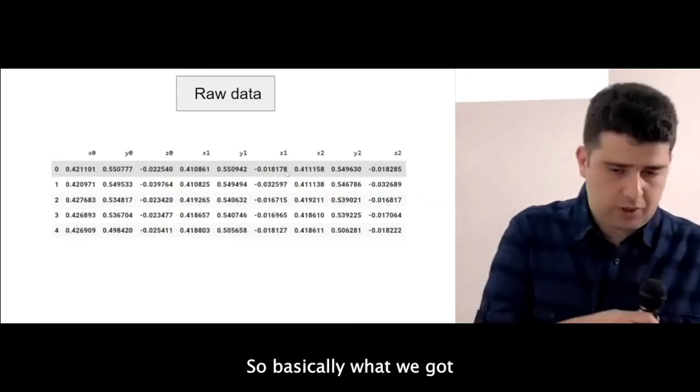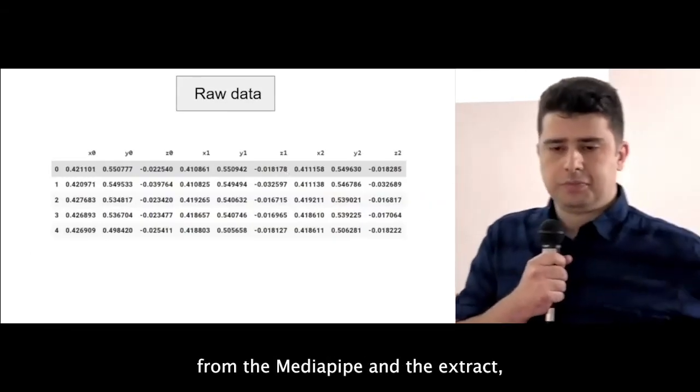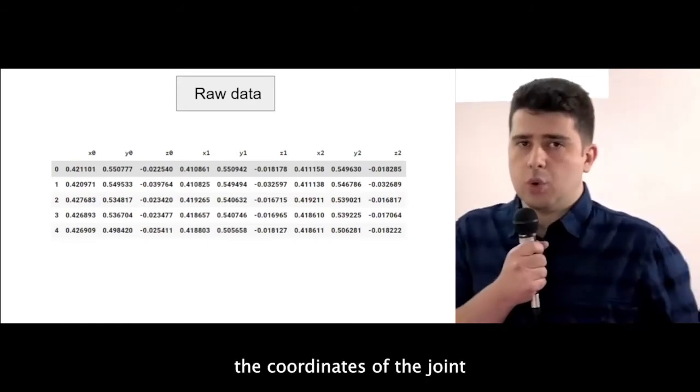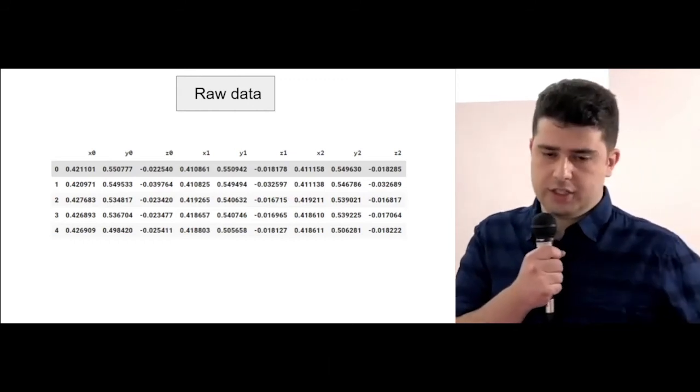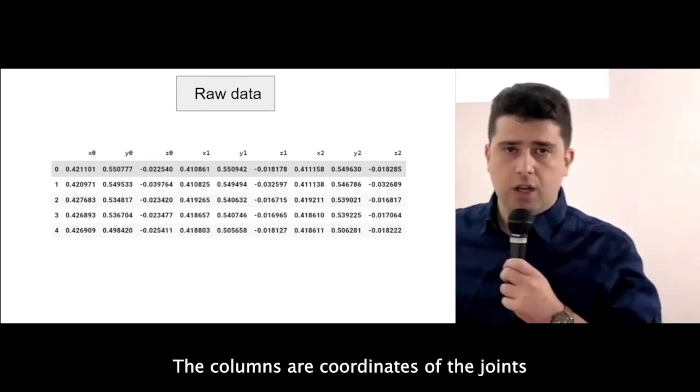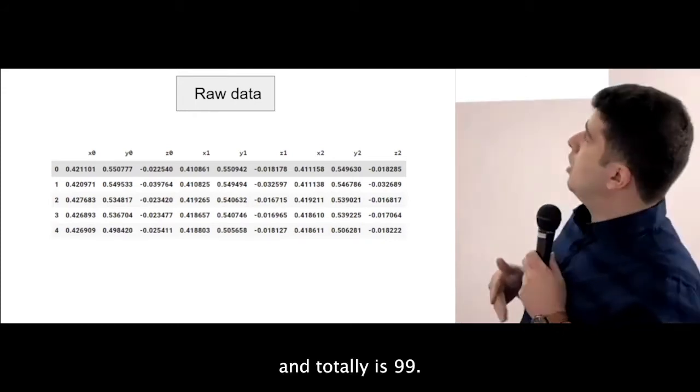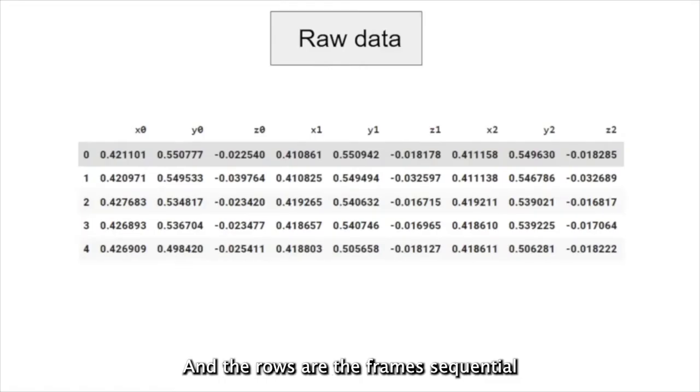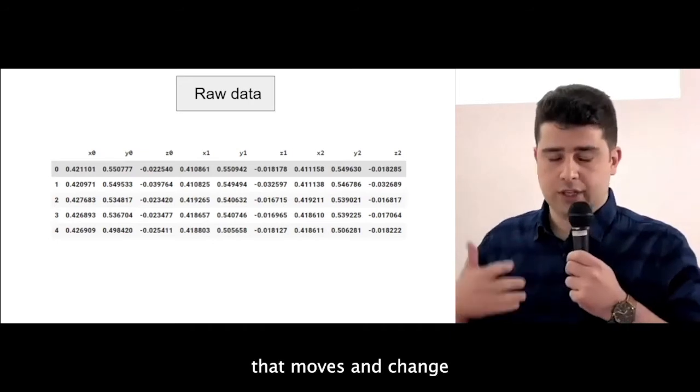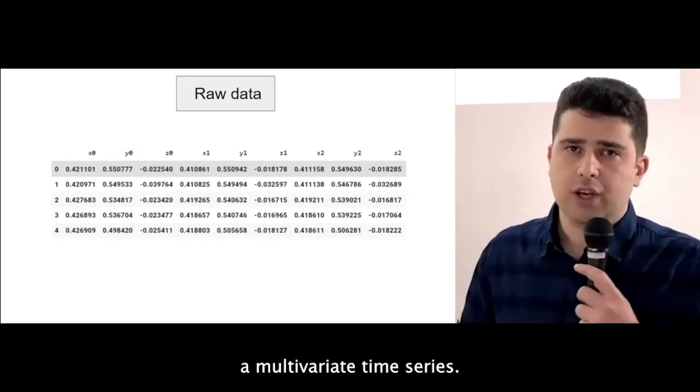So basically, what we get from the MediaPipe, we extract the coordinates of the joint that has been shown by my colleagues. So as you can see, we have a tabular data, the columns are coordinates of the joints, and total is 99. And the rows are the frames sequential in time. So when I talk about the time, that means that our problem is somehow time series. And we have a lot of features that move and change. And that shows that we have a multivariate time series.